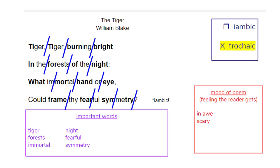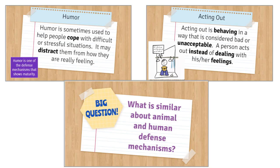Here's an example of looking at some poetry and looking at the syllable patterns and determining how it impacts the mood of the poem. And here are a few human defense mechanisms that we're going to look at as the kids are studying animal defense mechanisms in class. Our big overall question is going to be: what's similar about these types of defense mechanisms?